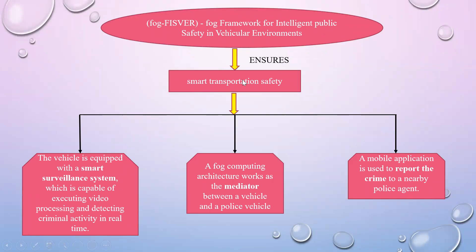The smart transportation safety system has a surveillance system. This surveillance system uses cameras to capture images and videos. The captured images and videos are processed, and through that processed data, the detection of criminal activities can be derived in real-time systems.